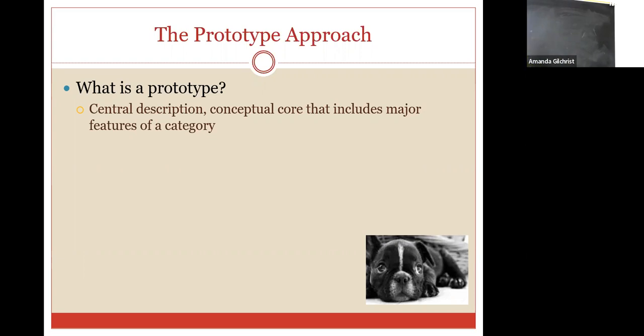So when we think about a prototypical dog, a prototype is basically a central description or a conceptual core that includes major features of a category. So dogs have ears, they have snouts, they have a nose, they have a tail. We get all of that, but there are a lot of other animals that are not dogs that have those exact same features. So, when we think of a dog, we're usually thinking about ears of a certain length, we're thinking of a snout of a certain length, a body shape of a certain kind, a certain height, a certain tail length. And what's interesting about a prototype, because it is a central description or a conceptual core, no dog that you encounter in everyday life actually looks like a prototype.